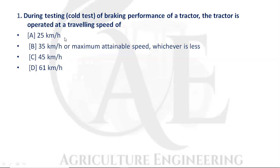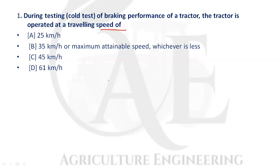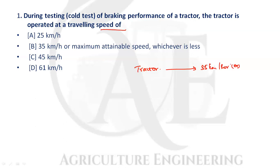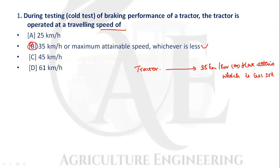First question: during testing of braking performance of a tractor, the tractor is operated at what speed? The tractor braking performance should be tested at an operating speed of 35 kilometers per hour or its maximum attainable speed, whichever is less. Option B is the correct answer.